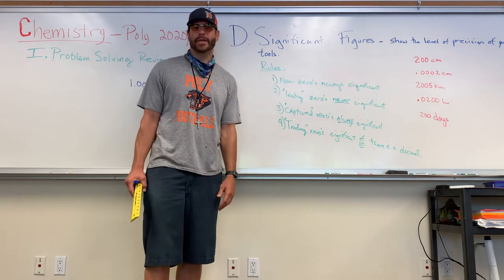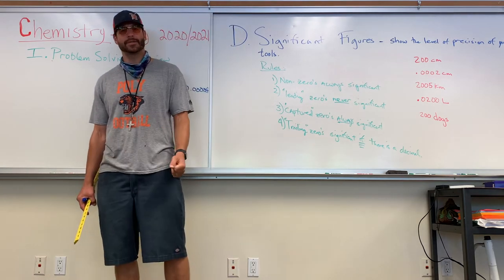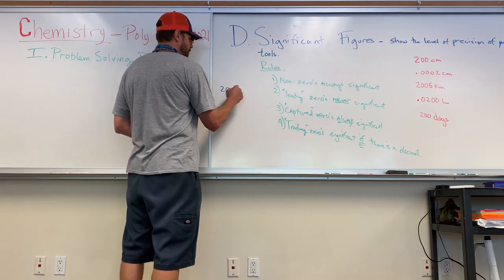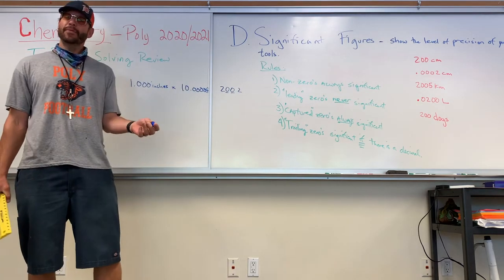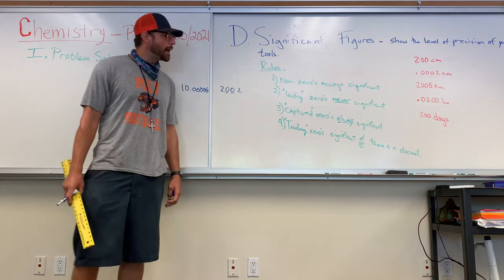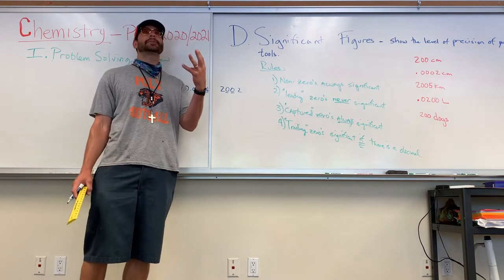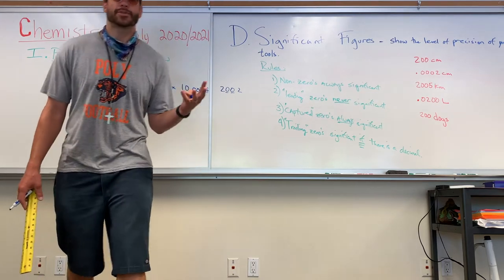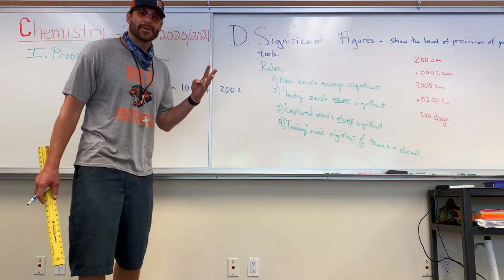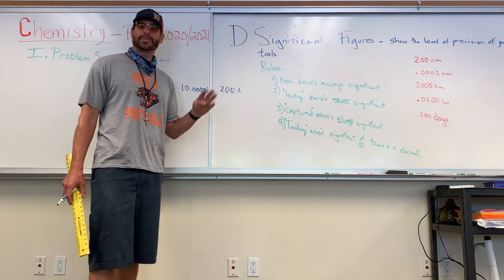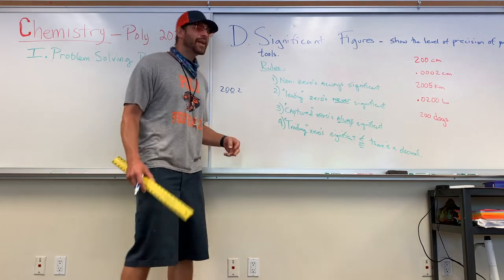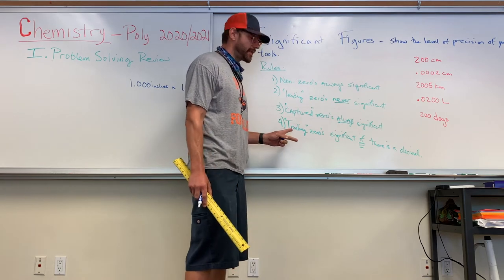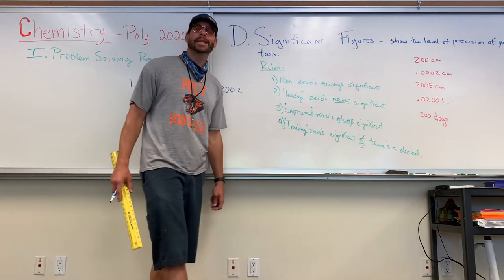Captured zeros are always significant. Captured zeros are zeros that come between any two non-zeros, like 2002 — both zeros are captured zeros, so yes, they are significant. Trailing zeros might or might not be significant. Trailing zeros are zeros that end a number. The question is: is there a decimal present? If there is a decimal present, those trailing zeros are significant — they're there to show significance, not as placeholders. If there's no decimal present, they're not significant.